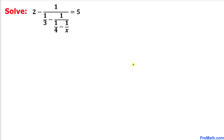Welcome to pre-math. In this video we are going to solve a multi-layered rational equation: 2 minus 1 divided by 1 over 3 minus 1 over, and then once again 1 over 4 minus 1 over x, equals 5. We are going to solve this equation for x.